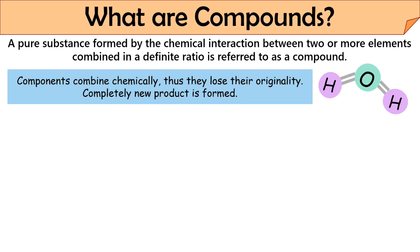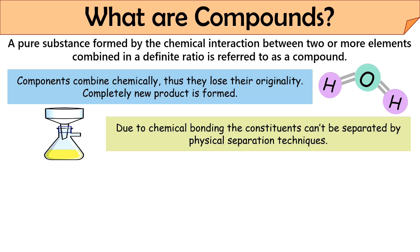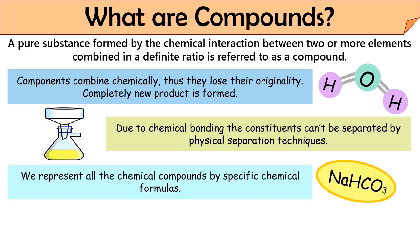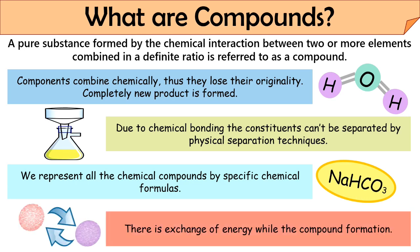For instance, water is a compound formed of two hydrogen atoms and one oxygen atom, which are both in gaseous state. But when combined chemically, they produce water or H2O, which is in a liquid state. Because of the chemical bonding, the constituents of compounds cannot be separated by any physical means. The compounds are represented by chemical formulas — each compound is depicted with the help of a specific formula generated by the symbols of its constitutional elements. During the formation of compounds, either old bonds break or new ones are formed, so there is a proper give and take of energy between the elements.